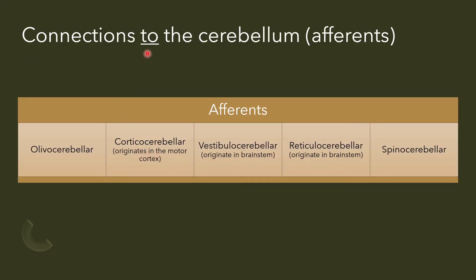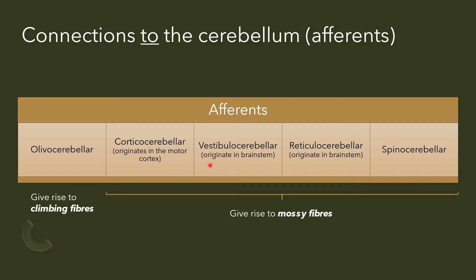Now let's talk about connections to the cerebellum, called afferent fibers. As previously mentioned, climbing fibers originate from the inferior olive in the medulla. All four other groups give rise to mossy fibers: corticocerebellar afferents primarily originating in the motor cortex but also involving other cortical areas; vestibulo-cerebellar and reticulo-cerebellar afferents originating in the brainstem; and spinocerebellar tracts carrying sensory information from tendon organs, muscle spindles, as well as touch receptors in the skin and joints. This provides all the information the cerebellum needs to process and integrate in order to make decisions about initiating and planning movement.